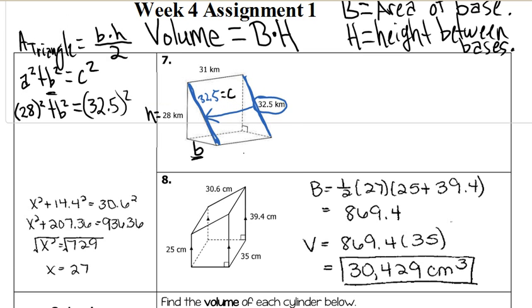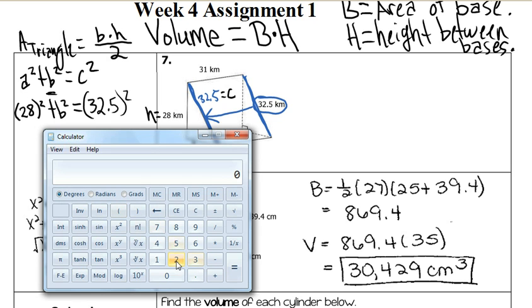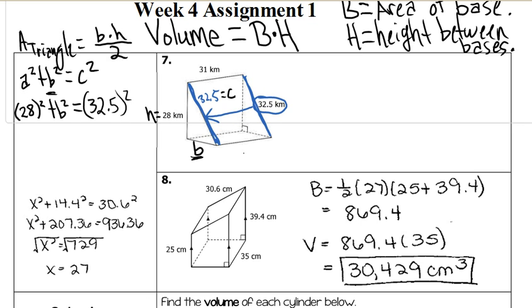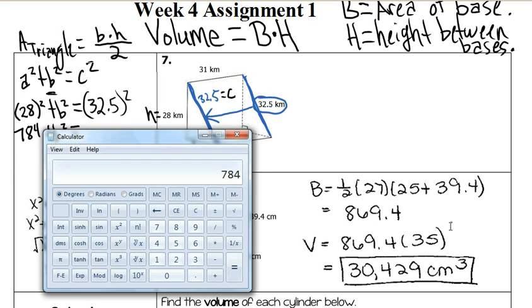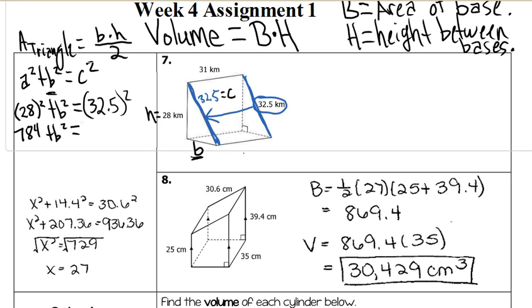Now, we have to do some calculations. So here, 28 squared, 28 times 28, equals 784. I'm going to write that down here, 784. Equals 32.5 squared.